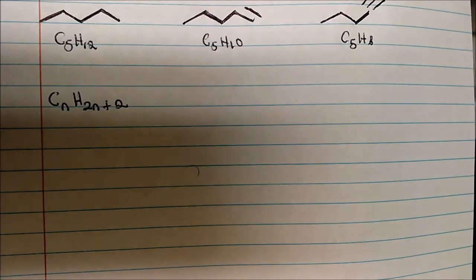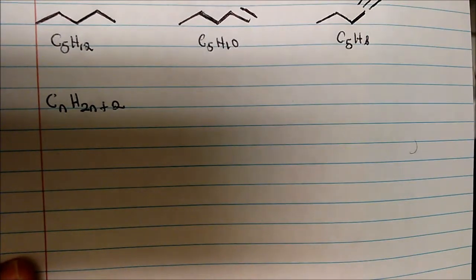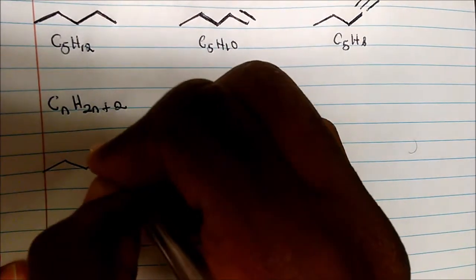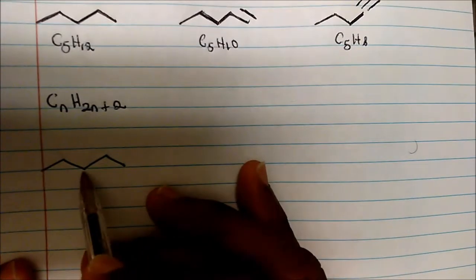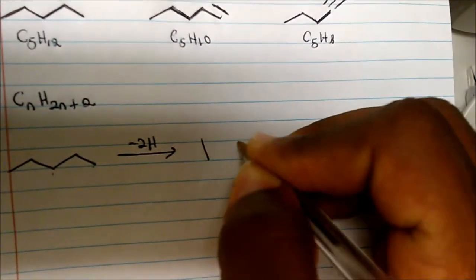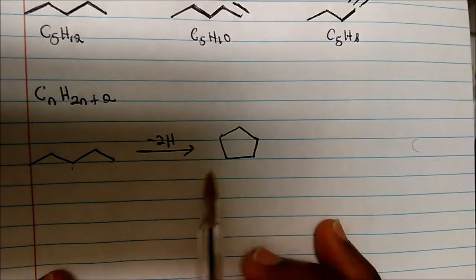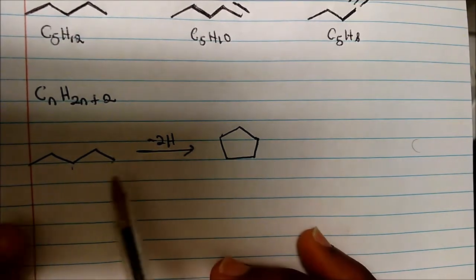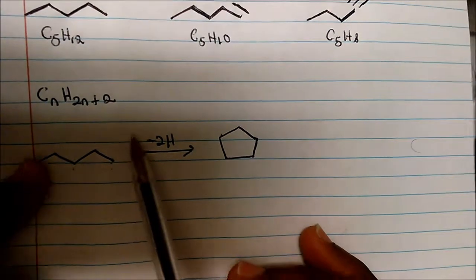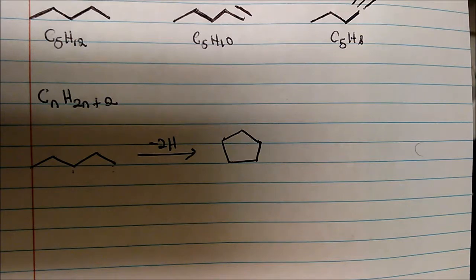Something important to point out is that a ring also counts for one degree of unsaturation. For example, consider pentane — we lose two hydrogens if we convert it to cyclopentane. So the ring counts for one degree of unsaturation. You can imagine taking the two CH3 end groups and connecting them to form the ring, losing two hydrogens in the process.